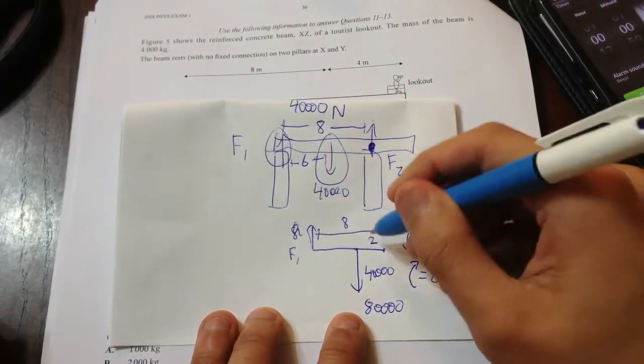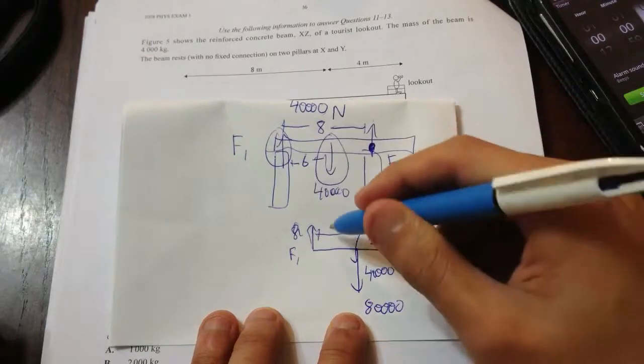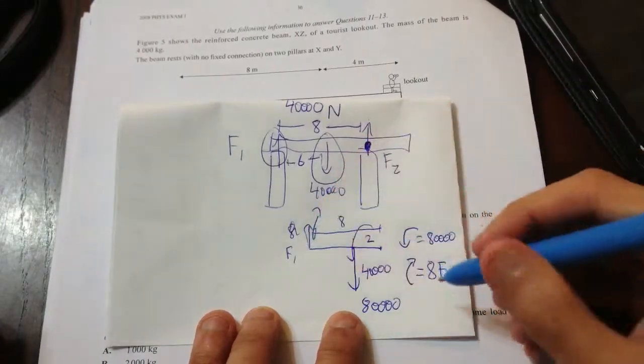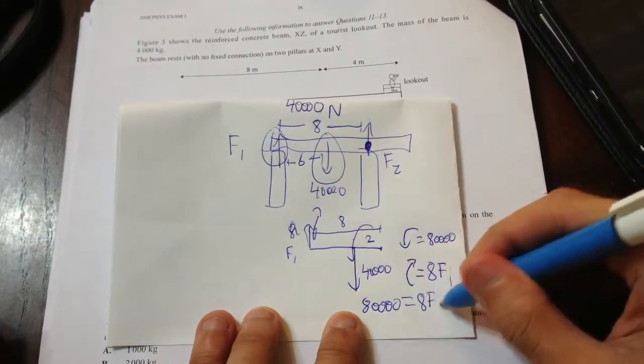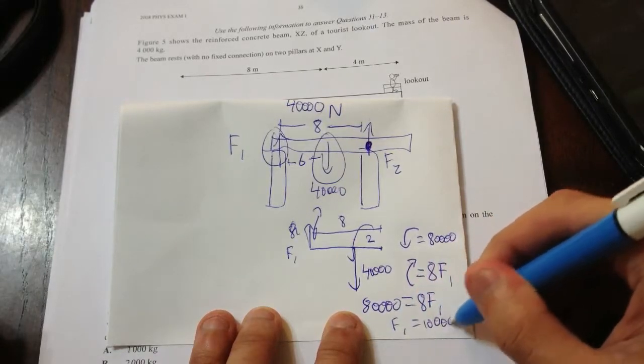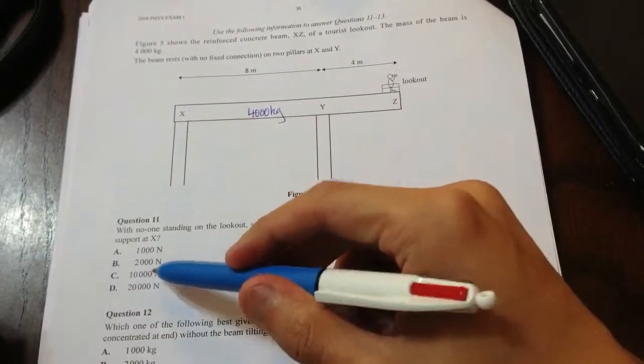80,000, this torque in this direction, because of gravity, equals the torque in the other direction, because of our pillar. Therefore, F1 equals 10,000. 10,000 newtons.